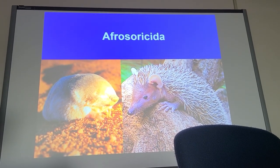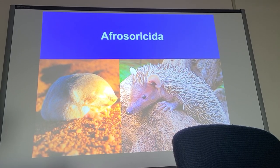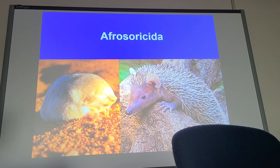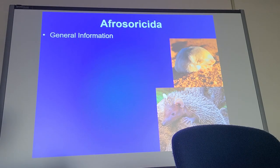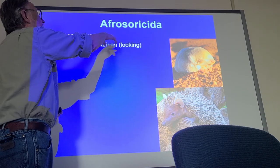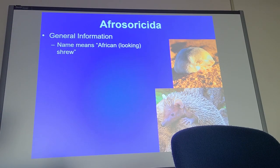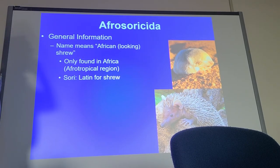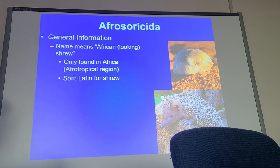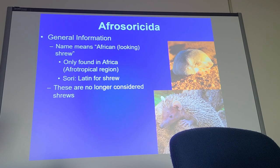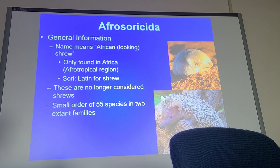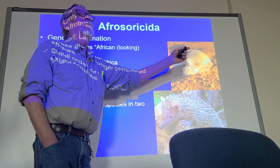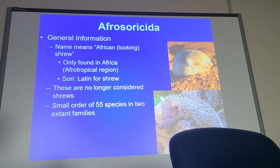I'm going to deal with these three orders today. Afrosoricida is a good name: 'Afro' means African, 'sori' means shrew, so it means African shrew. These are not true shrews, though. They are only found in the Afrotropical region — Sub-Saharan Africa — and they are shrew-like, but not true shrews. There are two families, and I'll mention those.